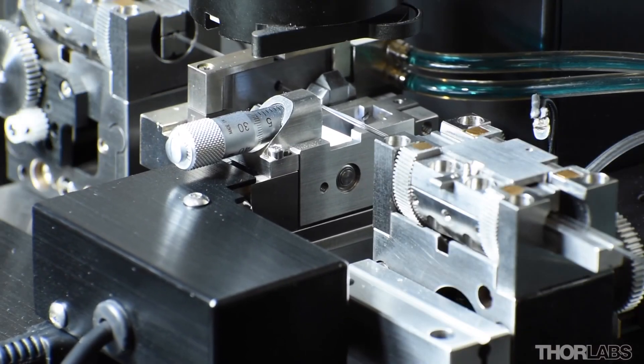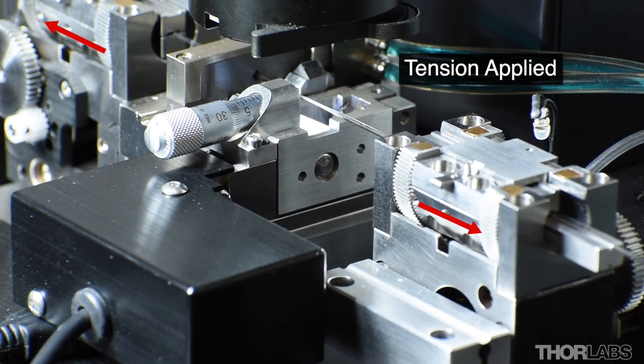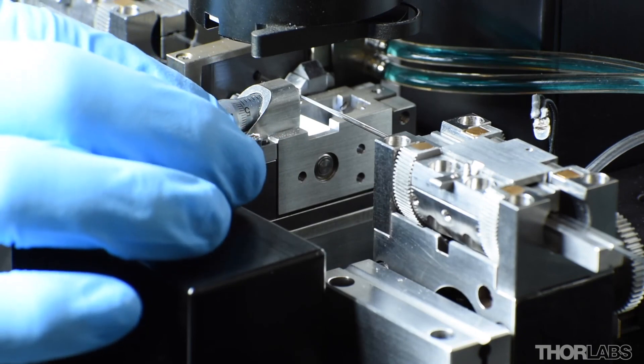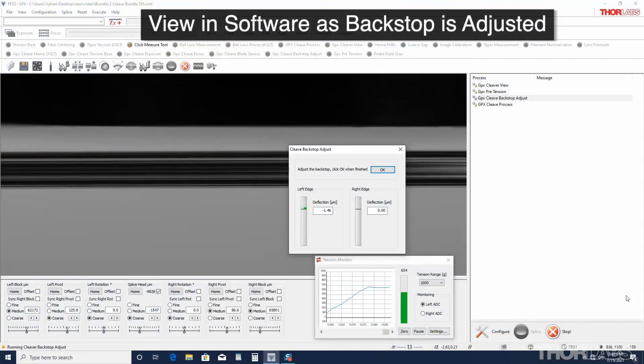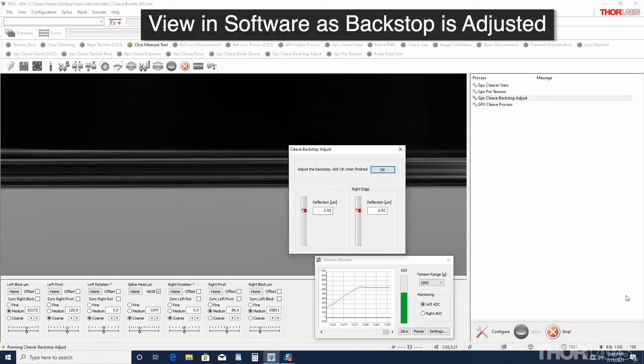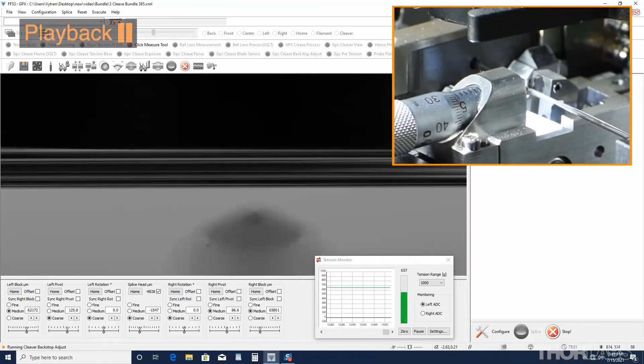The splice head will move to the cleave position, and the fiber holding blocks will draw tension, and pause while the user positions the micrometer backstop. The micrometer backstop guide will turn red if the fiber is deflected by the backstop. The cleave blade advances forward so that it is close to, but not touching, the outer edge of the bundle.